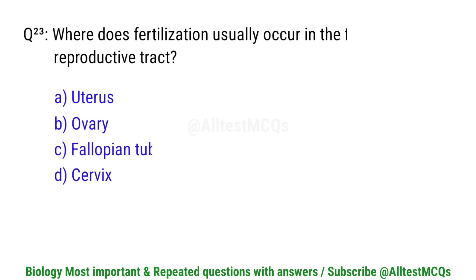Question number 23. Where does fertilization usually occur in the female reproductive tract? Correct option is C. Fallopian tube.